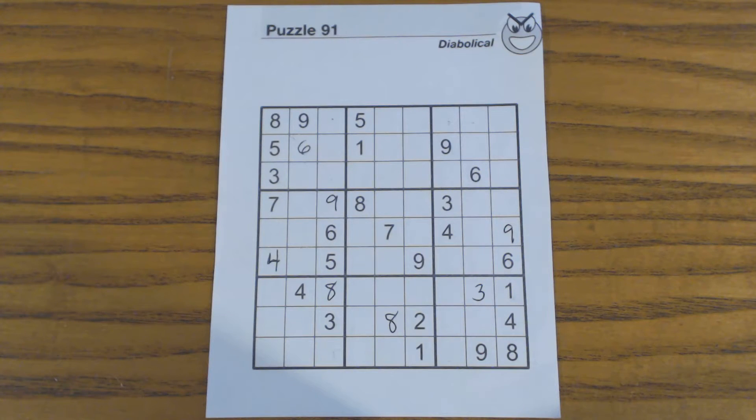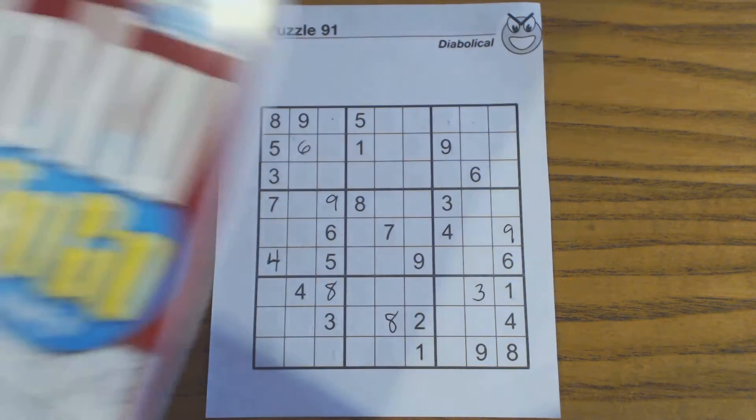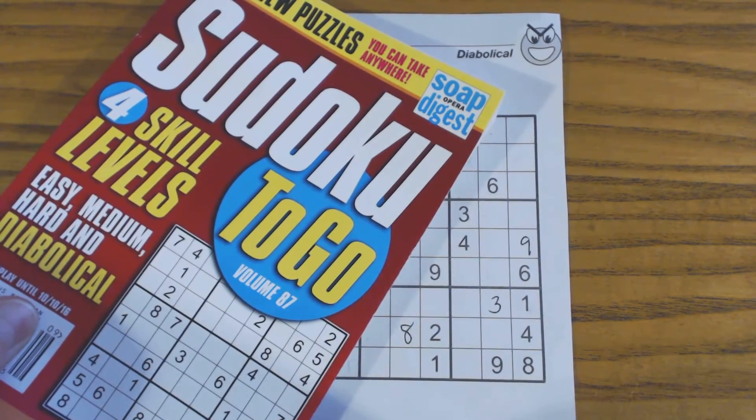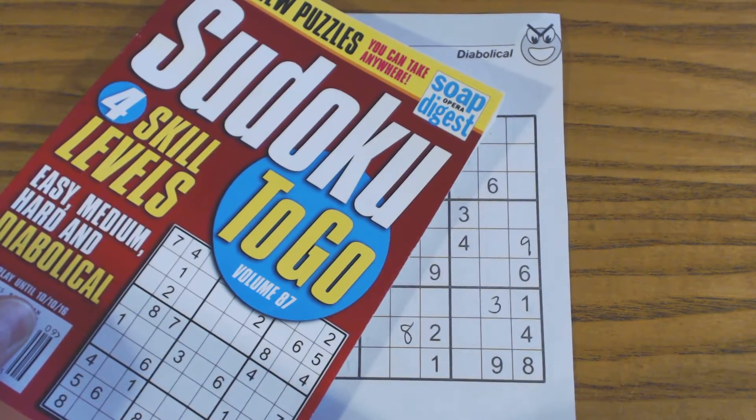This is another Sudoku Primer video. In this video we're going to use row completion and finding twins in a fairly complex way in order to find a number. This is puzzle number 91 in Sudoku2Go volume 87 by Soap Opera Digest.